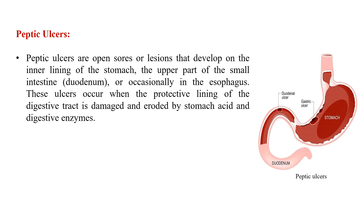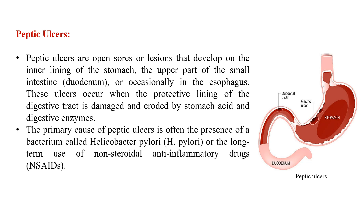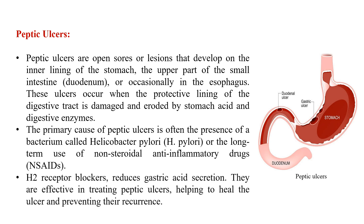Next is peptic ulcers. Peptic ulcers are open sores or lesions that develop on the inner lining of the stomach or upper part of the small intestine — the duodenum — and occasionally in the esophagus. These ulcers occur when the protective lining of the digestive tract is damaged or eroded by stomach acid and digestive enzymes. The primary cause is often the bacterium Helicobacter pylori or long-term use of NSAIDs. H2 blockers reduce gastric acid secretion, helping ulcers heal and preventing their recurrence.